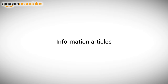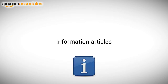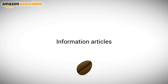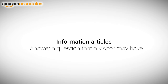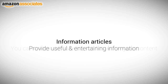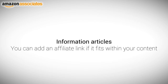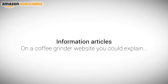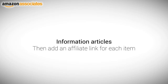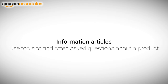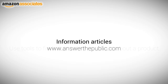Information articles are typically how-to or general style articles. For a coffee grinder website, you could write about the different regions where coffee beans are grown, or how coffee is made and the roasting process. An informational article is about answering a question that a visitor may have, or providing some useful and entertaining information. If it fits within your content, you can then add an affiliate link to a related Amazon product page. For example, you could explain the difference between a burr grinder and a blade grinder, then add an affiliate link to the Amazon product pages for each item.